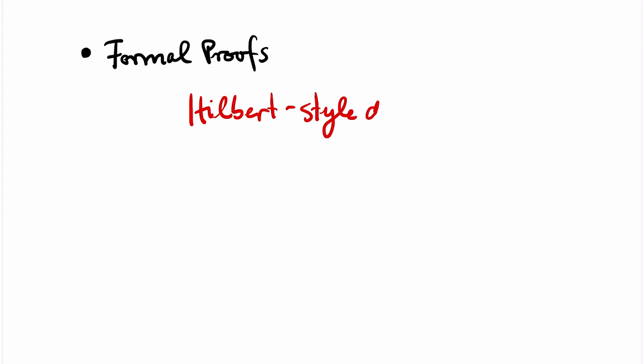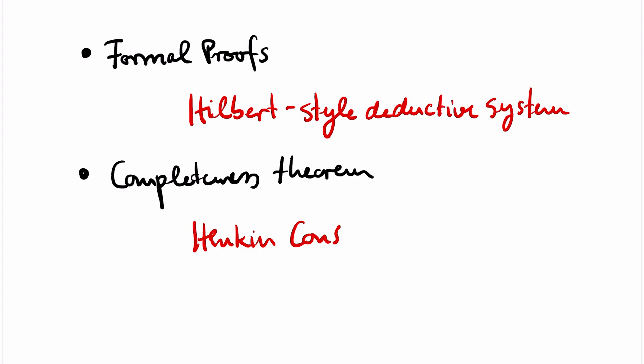Welcome! This video is about the formal proof system for first-order logic. I will first define what formal proofs are. Our proof system is called a Hilbert-style deductive system, and there are many variants of such systems. The differences are not so important, but what is important is that we are able to prove a completeness theorem for our proof system.